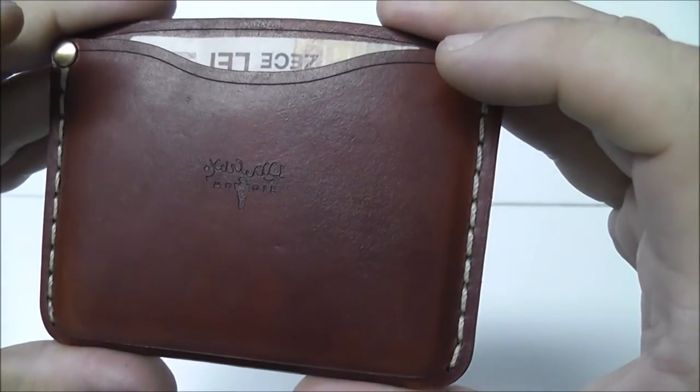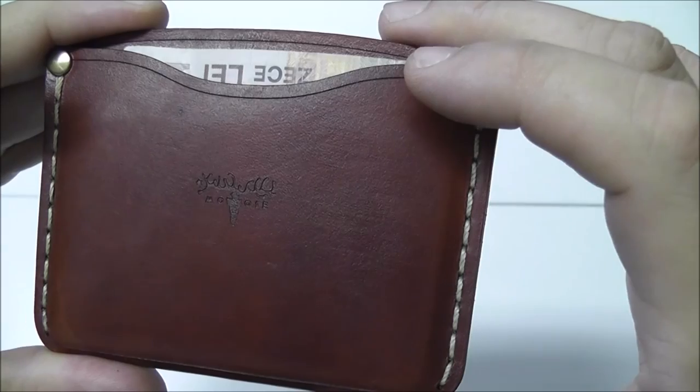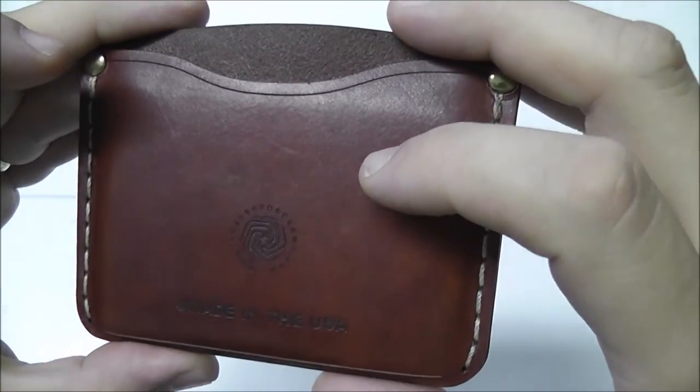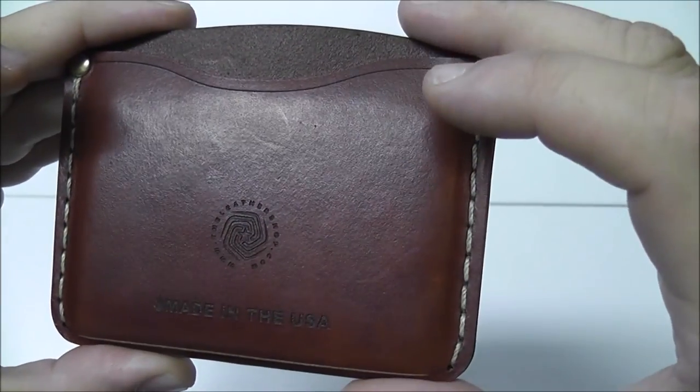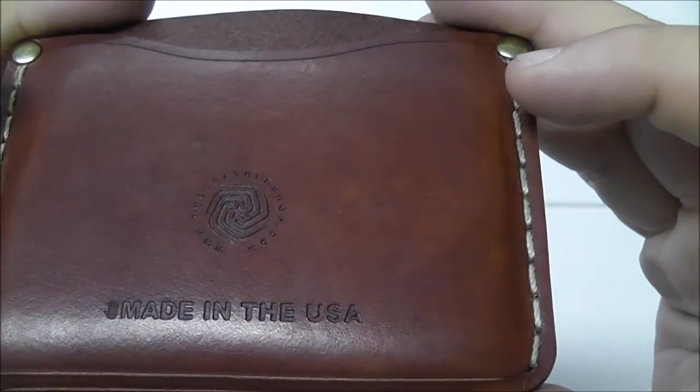The logo is embossed on the front side of the wallet. And on the back side, we also have the store's logo and the little stamp that says handmade in the USA.